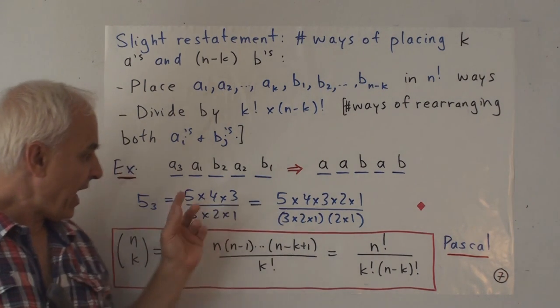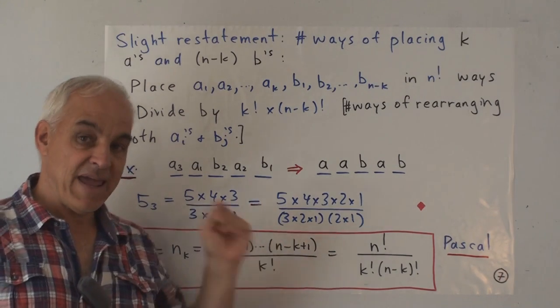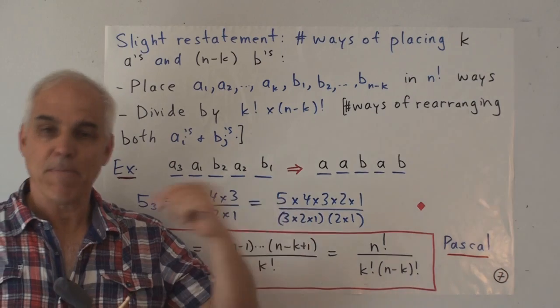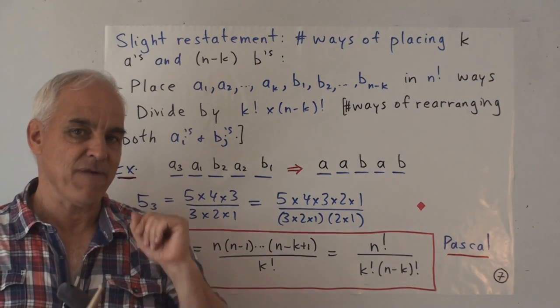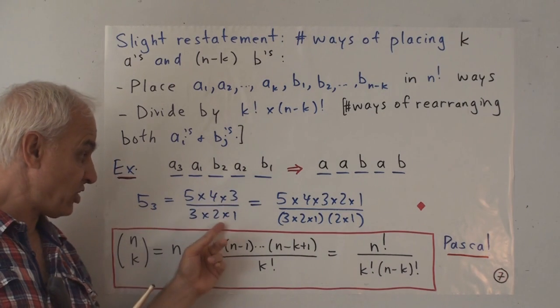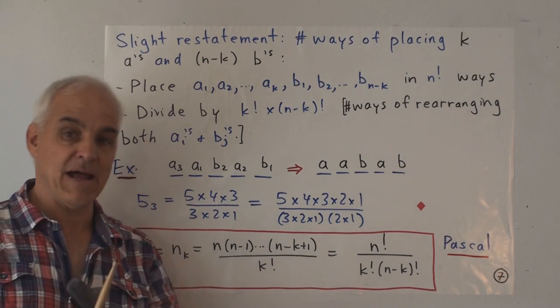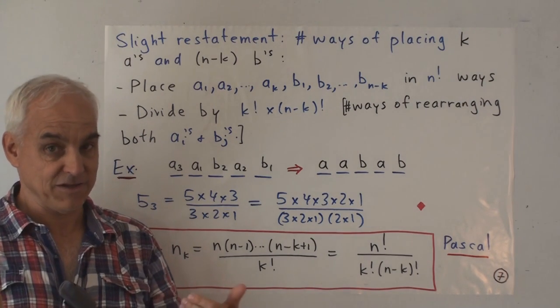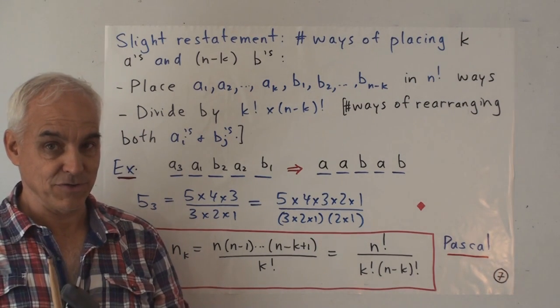So more generally, any product of k consecutive numbers must be divisible by k factorial. Why? Because that ratio is counting the number of ways of choosing k things from n. So it has to be a positive integer.